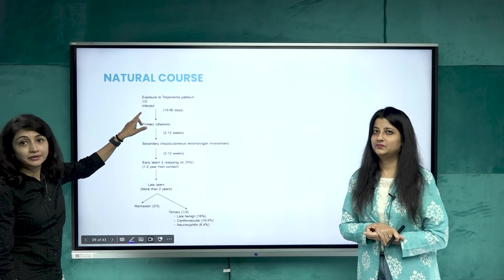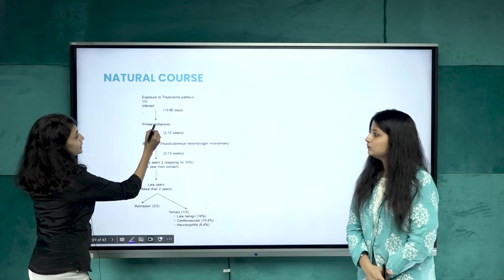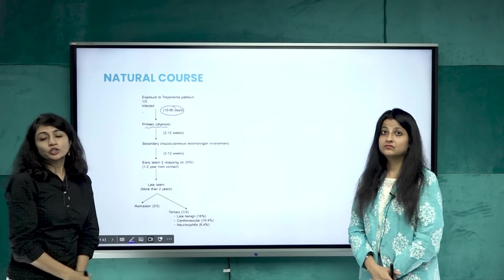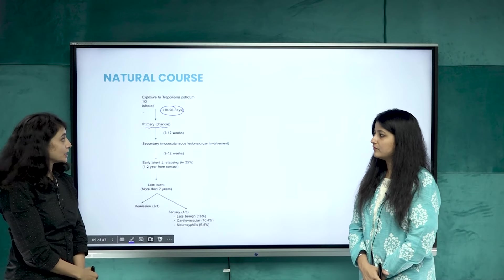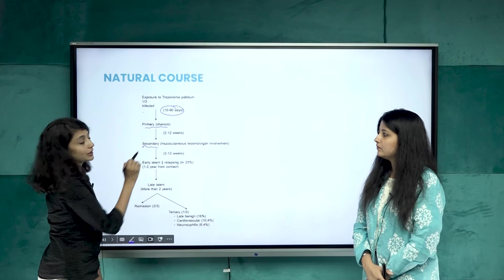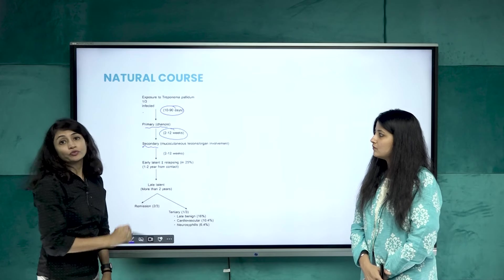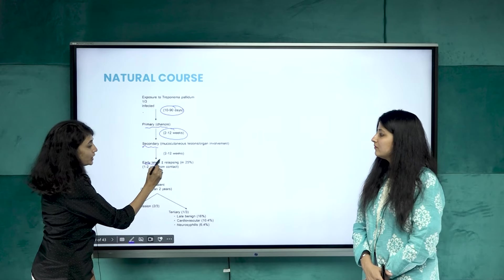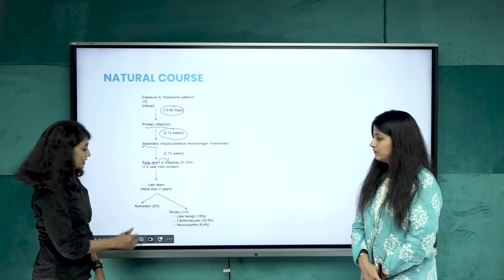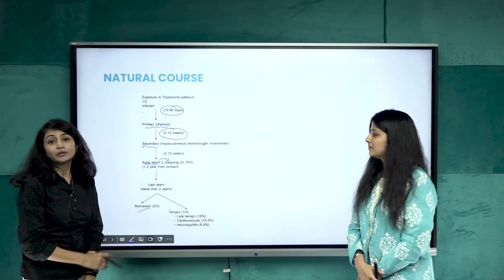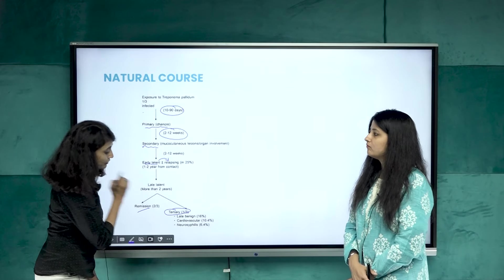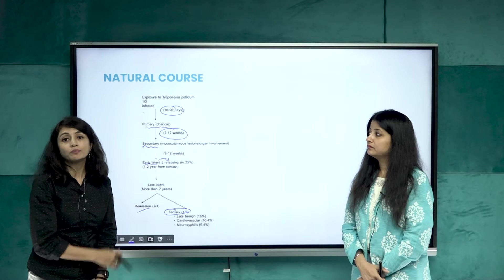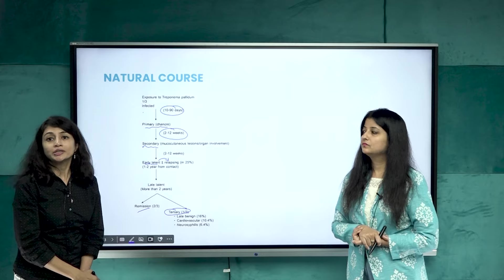When a patient is exposed to Treponema pallidum, one third gets infected and usually develops a primary lesion called a chancre in 10 to 90 days — the large variation depends on inoculum size. If untreated, they progress to secondary stage with an incubation of 2 to 12 weeks, then to a latent phase that may relapse or go into late latent, and eventually into tertiary syphilis after years.